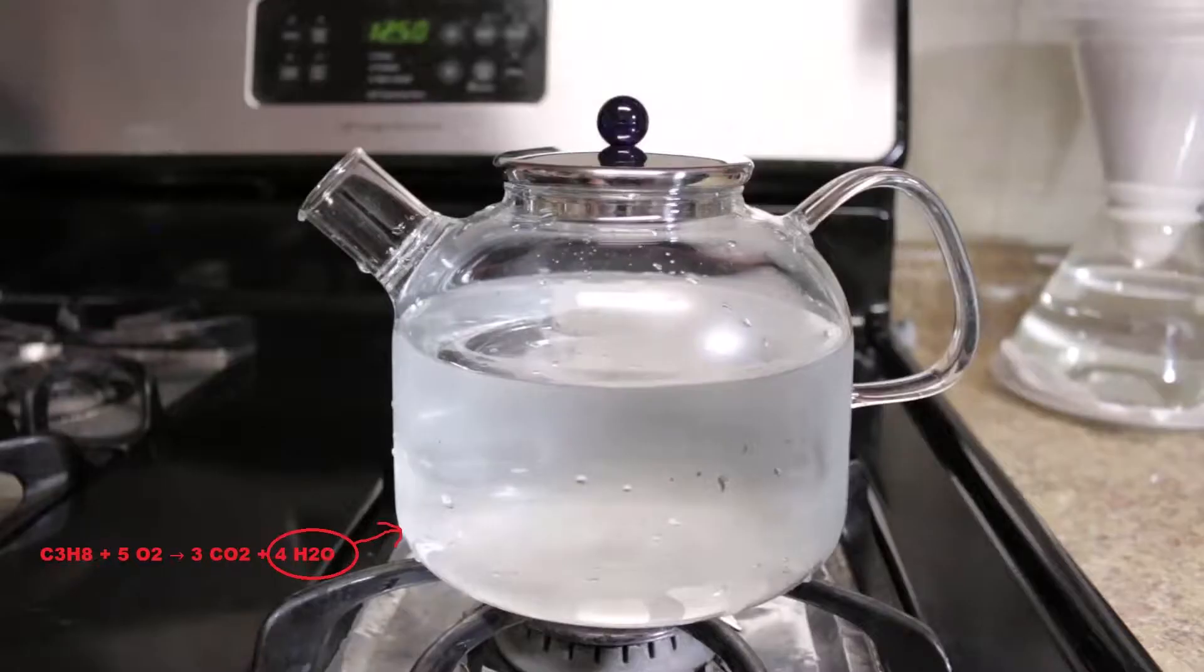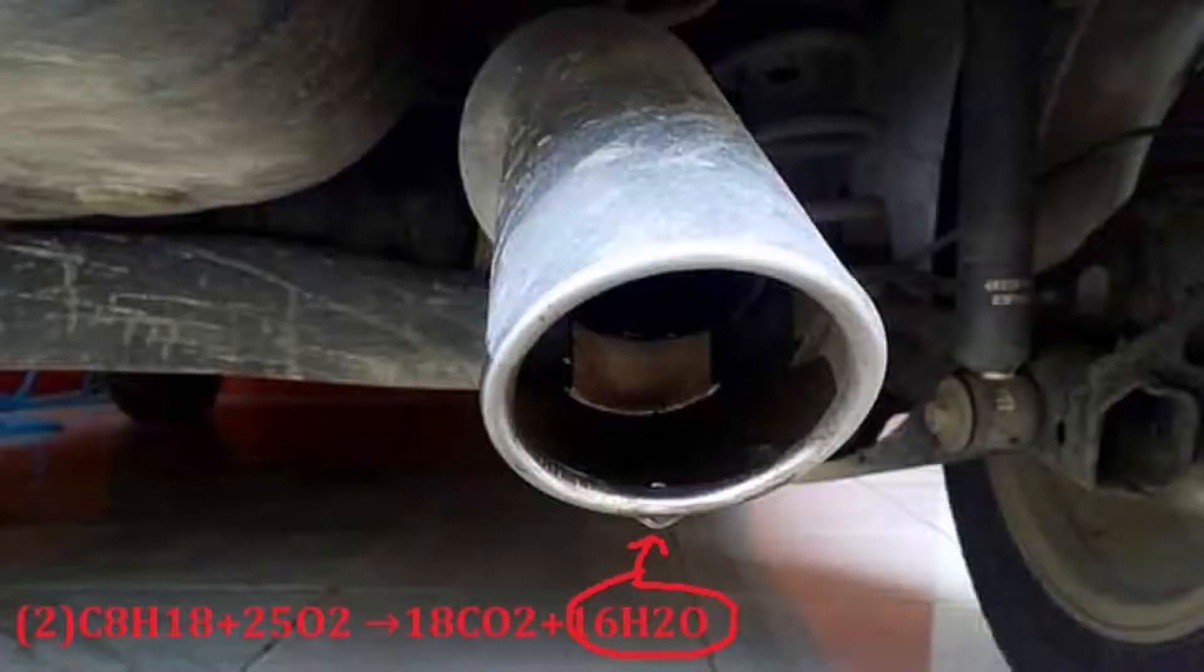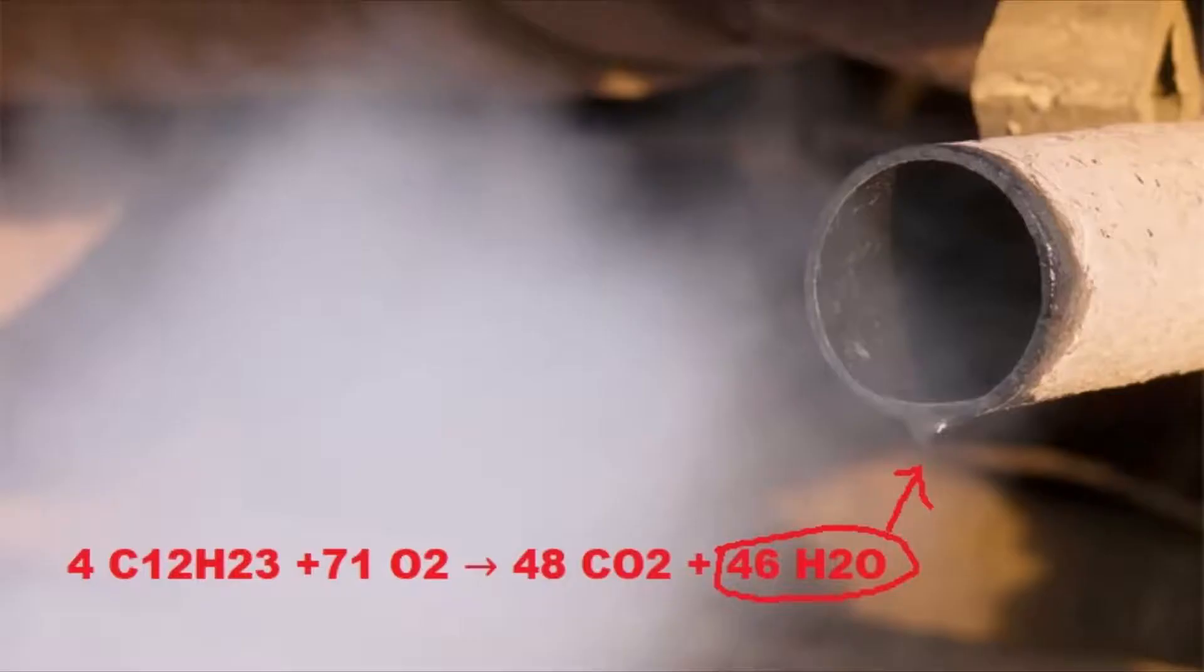Assuming gasoline as octane, which is mostly true, the chemical equation of burning is as follows: 2 molecules of octane react with 25 molecules of oxygen to produce 18 molecules of carbon dioxide and 16 molecules of water.